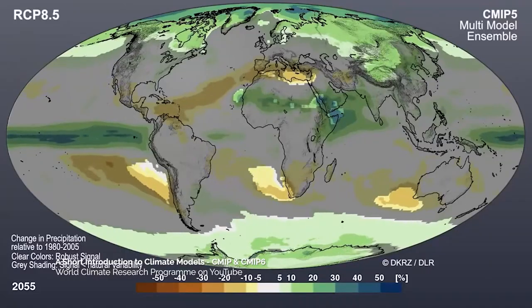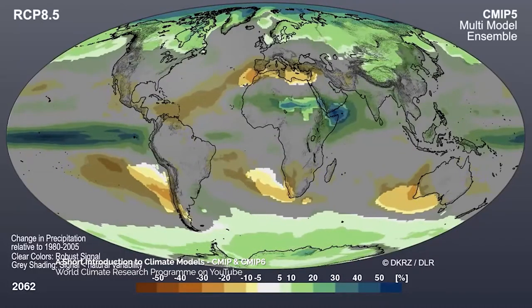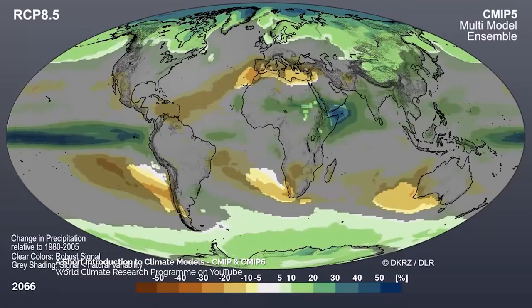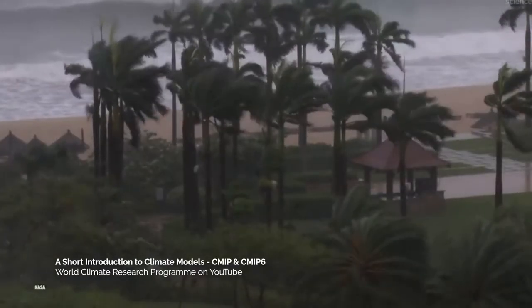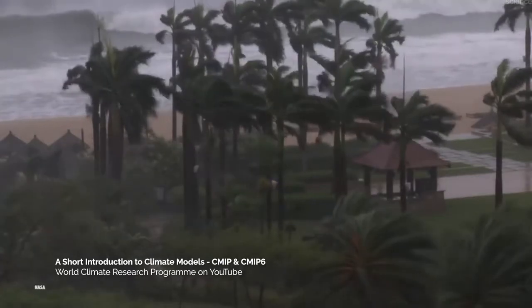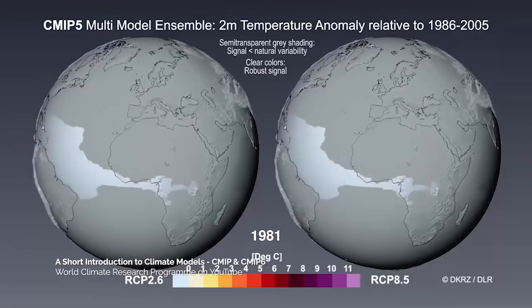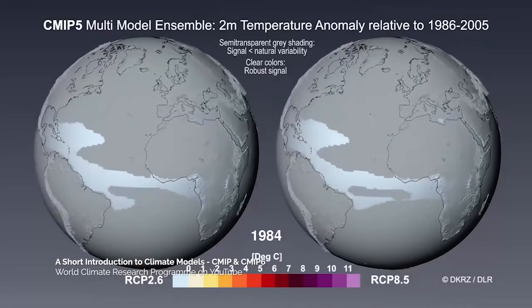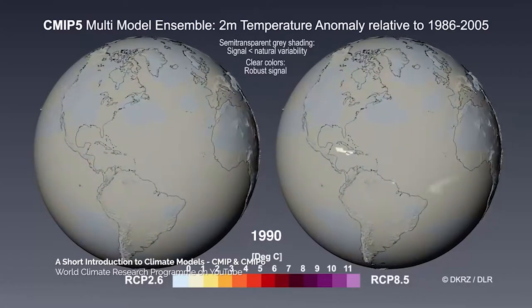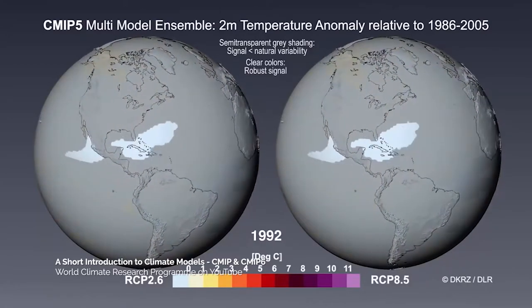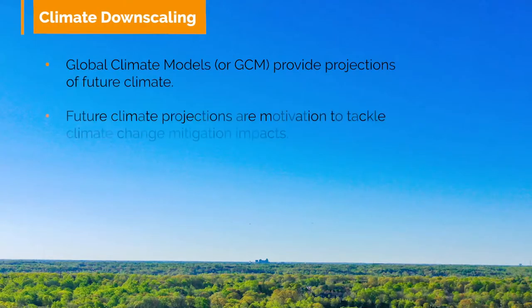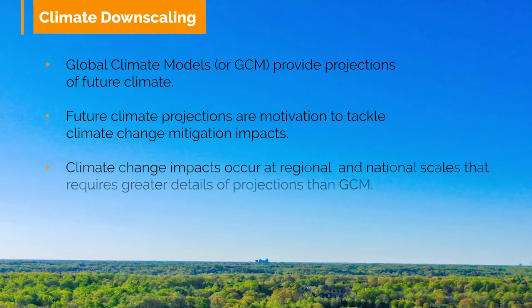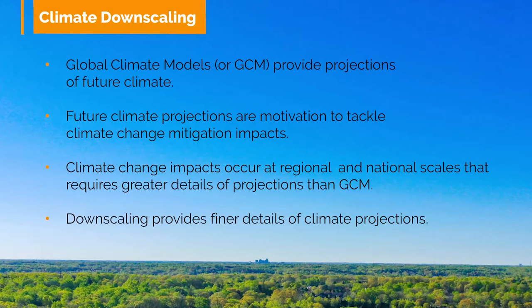Simulations from Phase 5 of this project, or CMIP-5, were used by the Intergovernmental Panel on Climate Change in the development of their fifth assessment report. There is simulation data from around 48 GCMs available in the CMIP-5 archive.